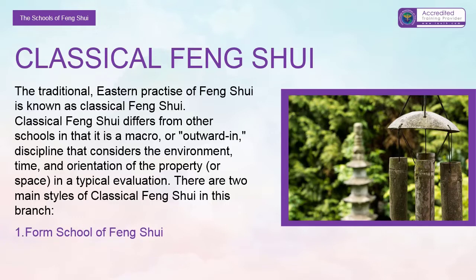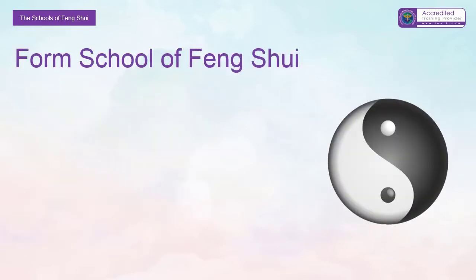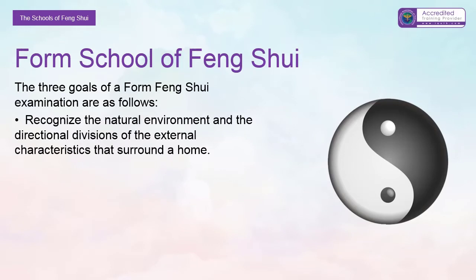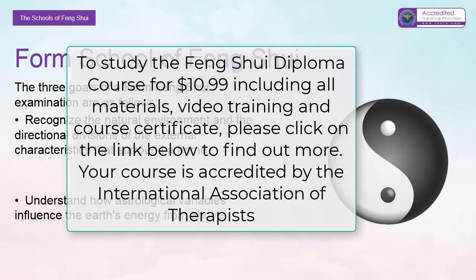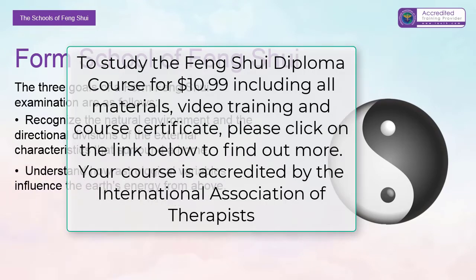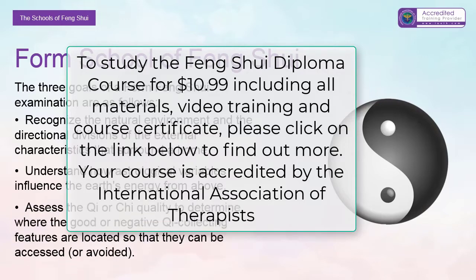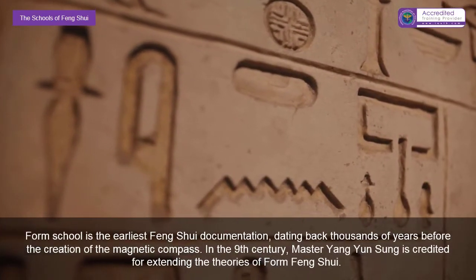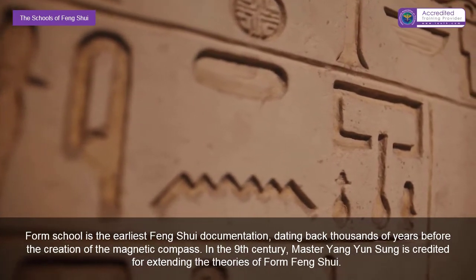One, the form school of feng shui; two, the compass school of feng shui. The three goals of a form feng shui examination are: to recognize the natural environment and the directional divisions of the external characteristics that surround a home; to understand how astrological variables influence the earth's energy from above; and to assess the chi quality to determine where the good or negative chi collecting features are located so that they can be accessed or avoided.